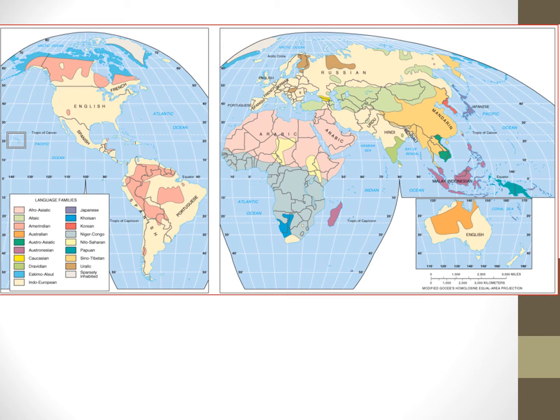So let's look at the spatial pattern of some of these prominent language families. Indo-European is spoken on all of the continents and is dominant in Europe, Russia, North and South America, Australia, and parts of Southwestern Asia and India.